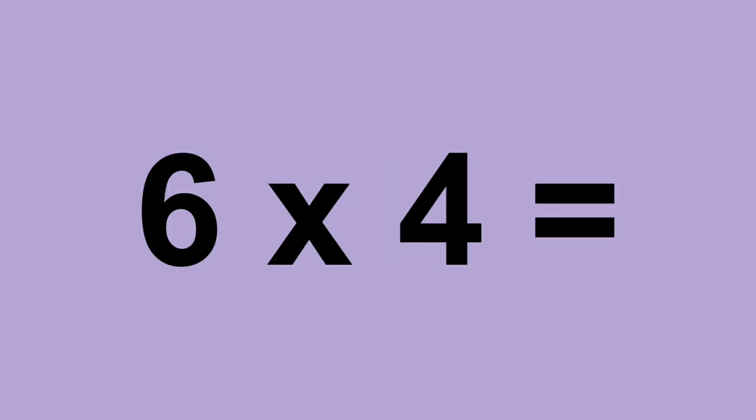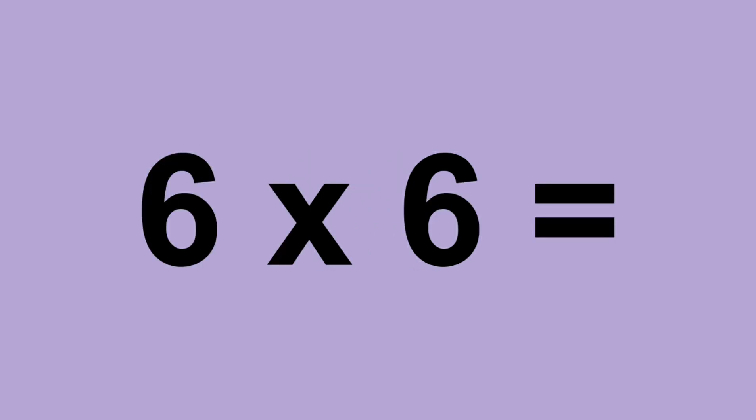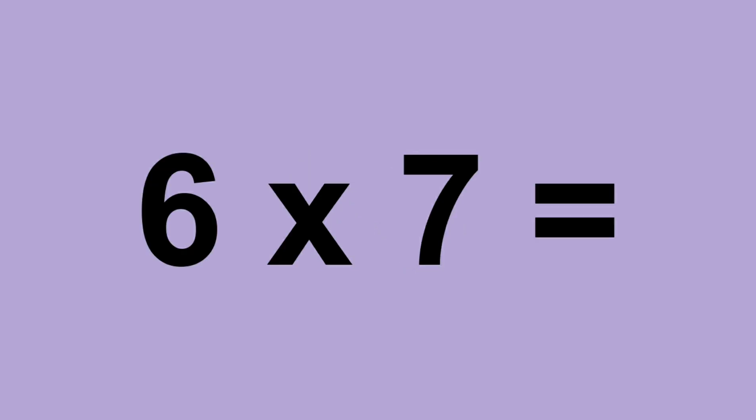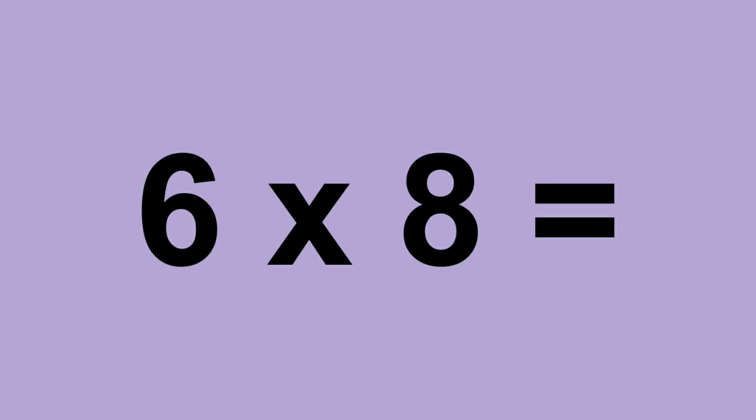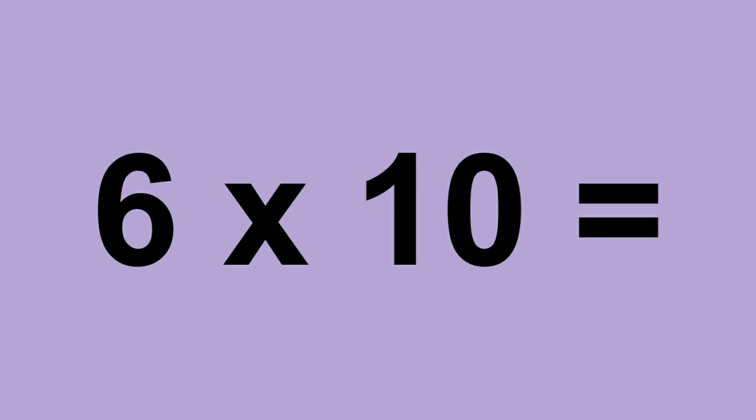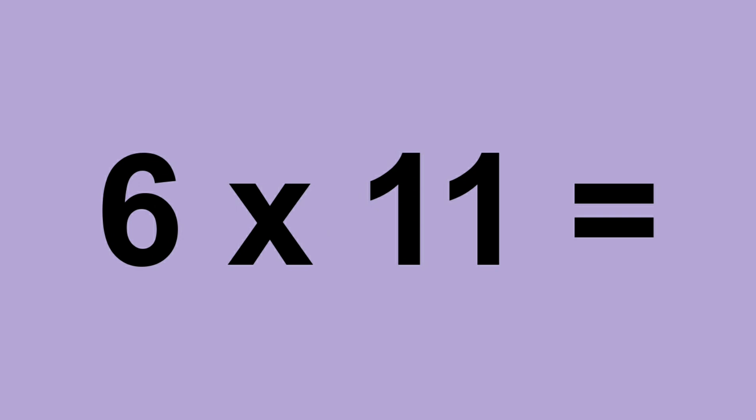6 times 4 equals 24. 6 times 5 equals 30. 6 times 6 equals 36. 6 times 7 equals 42. 6 times 8 equals 48. 6 times 9 equals 54. 6 times 10 equals 60. 6 times 11 equals 66. 6 times 12 equals 72.